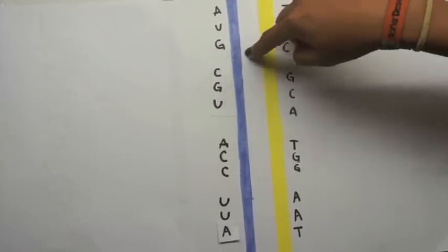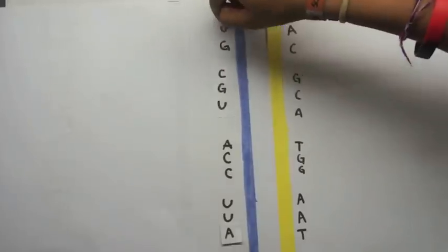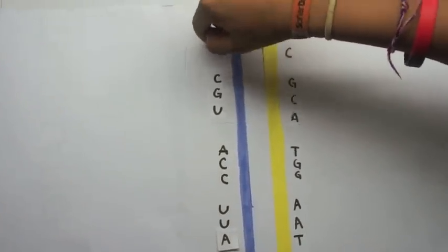Cytosine turns into guanine, and guanine into cytosine. The only change we can see here is that we see uracil.